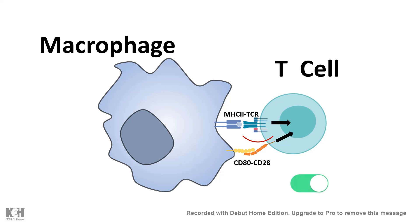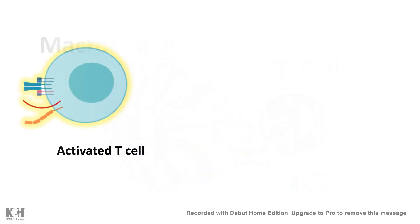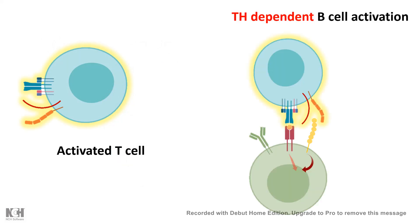Once these signals are received, the T-cell is considered to be activated. And once the T-cell is activated, it would interact with the B-cell and activate the B-cell as well. B-cell activation would lead to production of plasma cells and thereby antibodies against the pathogen to neutralize it.